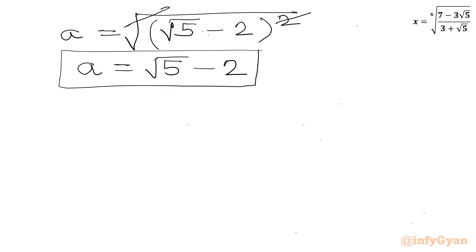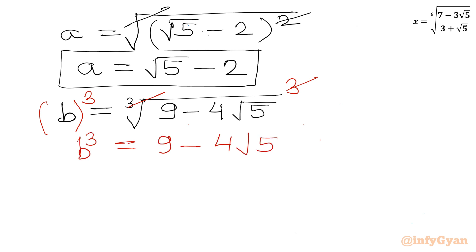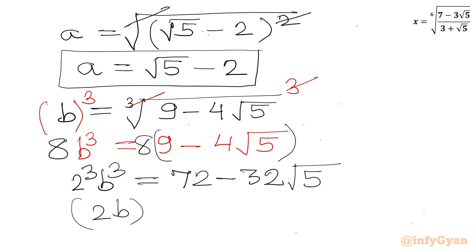Now the task is finding the cube root. So b equals the cube root of 9 minus 4√5. I will cube both sides so that the cube root and cube cancel, giving b³ = 9 minus 4√5. Now I will multiply both sides by 8, giving 2³ · b³ equals 72 minus 32√5. So (2b)³ equals 72 minus 32√5.